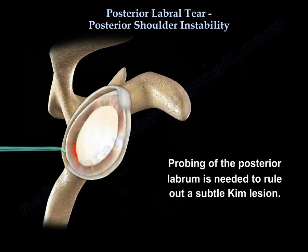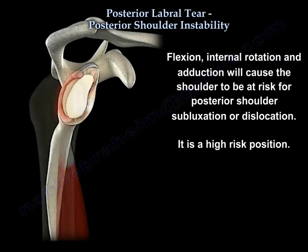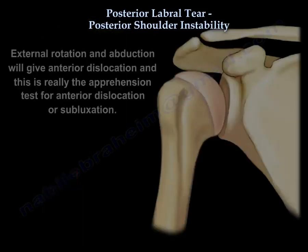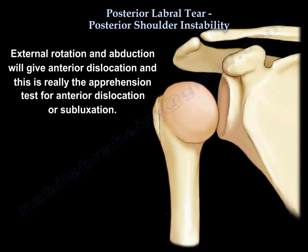Probing of the posterior labrum is needed to rule out a subtle Kim lesion. Increased glenoid retroversion increases the risk of posterior shoulder instability by six times. Flexion, internal rotation, and adduction will cause the shoulder to be at risk for posterior shoulder subluxation or dislocation — it is a high-risk position. External rotation and abduction will give anterior dislocation, which is the apprehension test for anterior dislocation or subluxation.